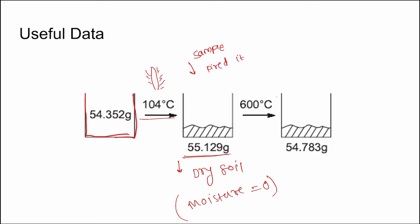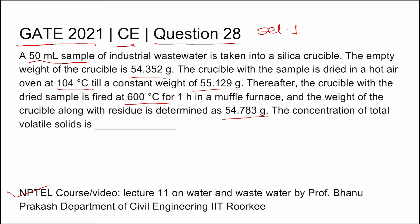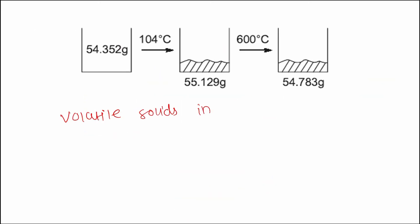Only volatile solids remain after drying. After heating at 600°C, the volatile solids will get evaporated, so only non-volatile solids will remain. The question is asking for the concentration of total volatile solids.